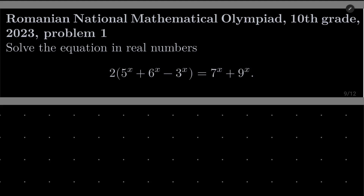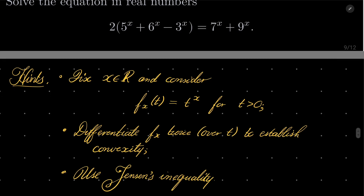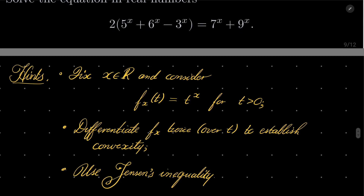Here are my hints for this problem. Fix real x and consider the following function f sub x of t — the main argument of this function is t — it's t to the power of x, where t is some positive number. Differentiate it twice over t to establish convexity, say that our function is convex or concave, and finally use Jensen's inequality to finish this problem. Give this problem a try and I will see you in just a minute.